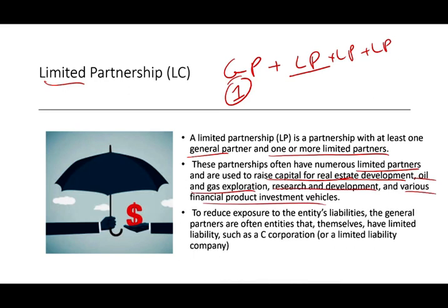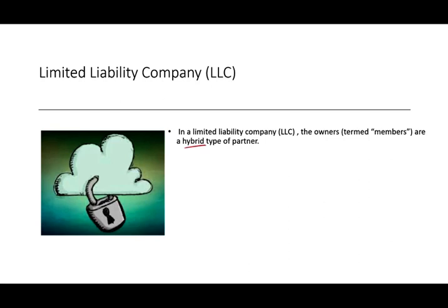To reduce exposure to the entity's liabilities, general partners often themselves have limited liability — for example, by being a C corporation or an LLC. An LLC's owners are called members, not partners. It's a hybrid type of entity: members get the benefit of a corporation — limited liability — and the benefit of a tax flow-through entity, meaning income is not taxed twice.